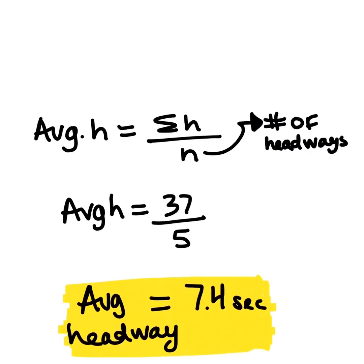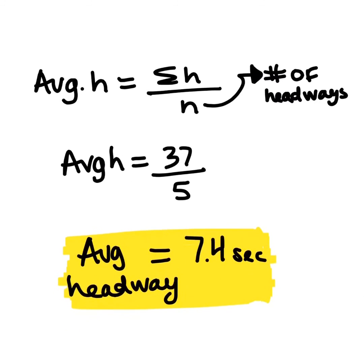To get our average headway, we will do the summation of headways over the number of headways. For us, we got 37 over 5, which gave us an average headway of 7.4 seconds.